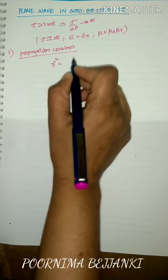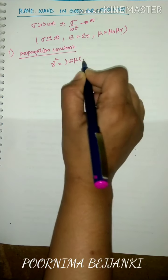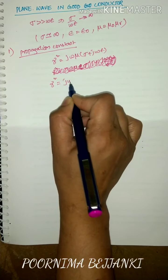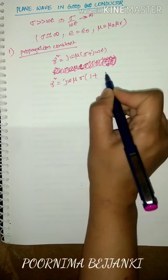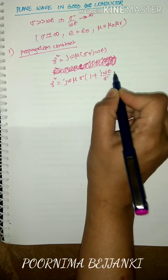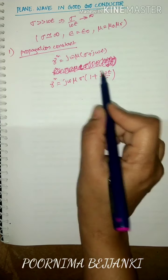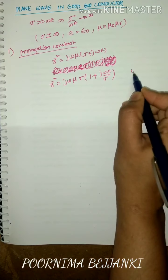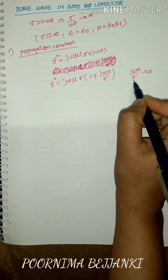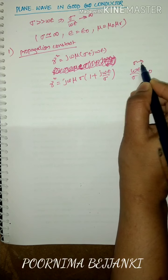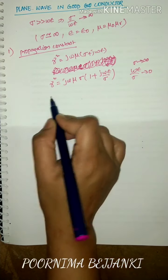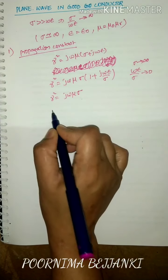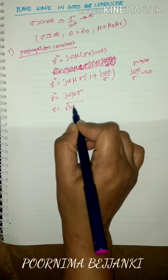The propagation constant gamma squared for a lossy dielectric is j omega mu times (sigma plus j omega epsilon). Taking sigma common: gamma squared equals j omega mu sigma times (1 plus j omega epsilon over sigma). Since sigma tends to infinite, omega epsilon over sigma tends to zero, so gamma squared equals j omega mu sigma, giving gamma equals root of j omega mu sigma.